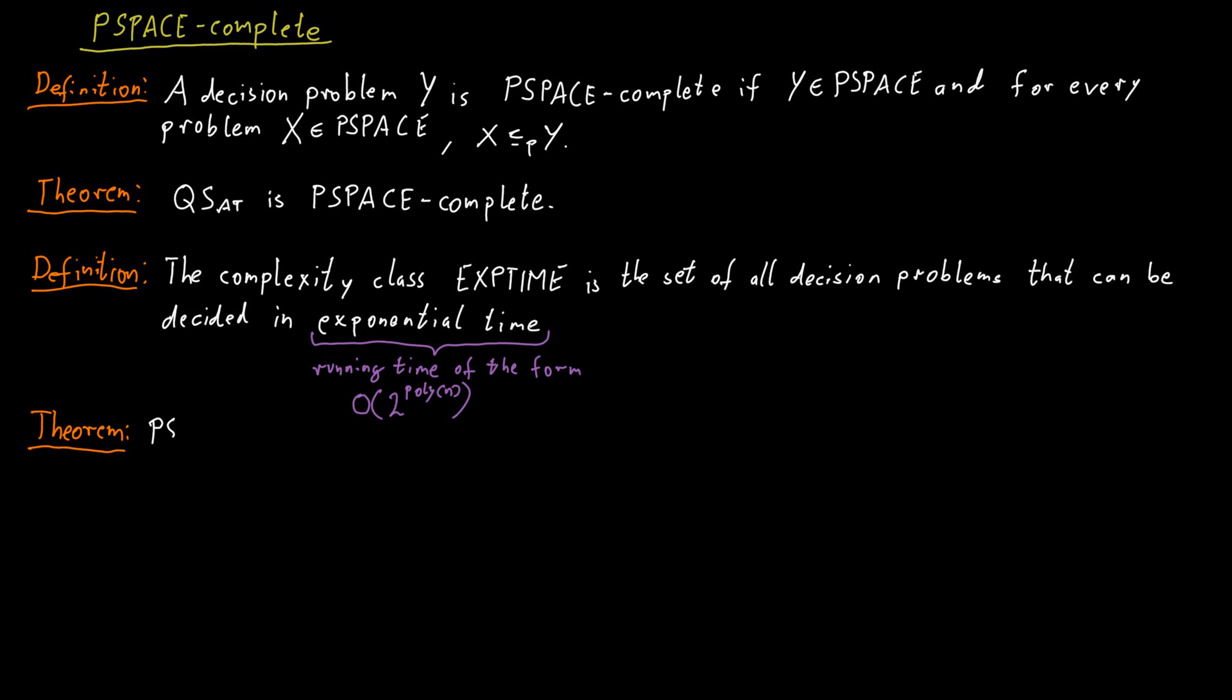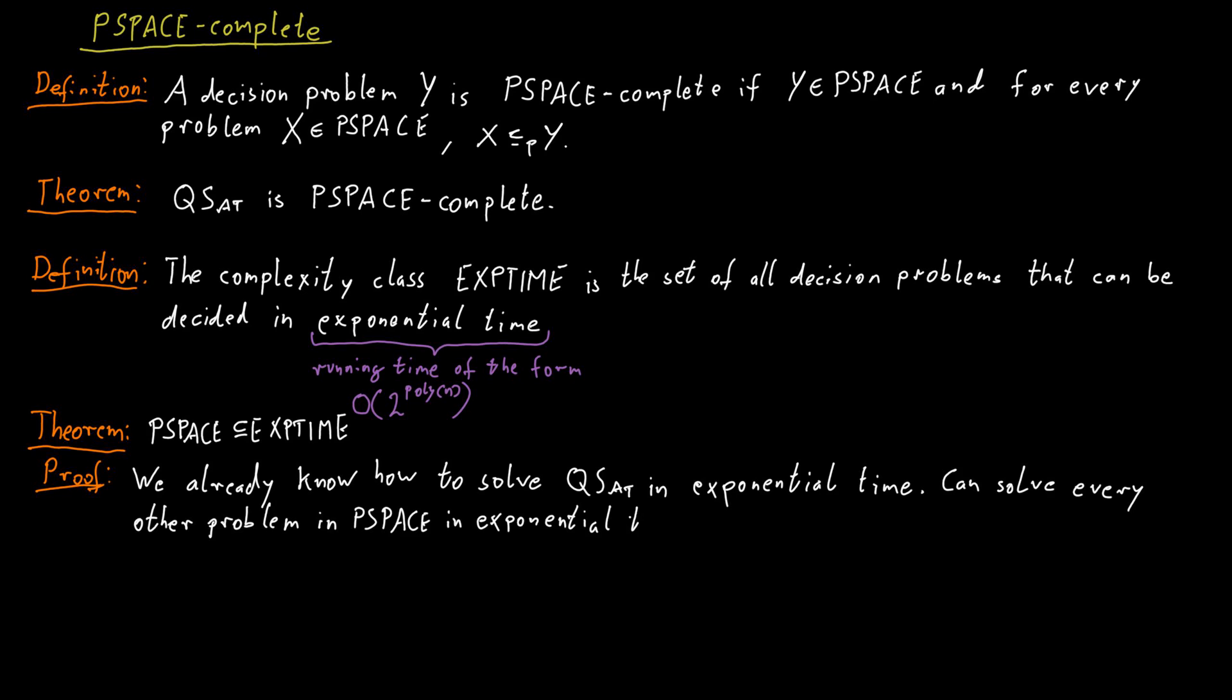The complexity class P-space is contained in the complexity class EXP-time. We can prove this in several ways. One way is to use quantified satisfiability. Our previous algorithm already solved quantified satisfiability in exponential time. Now, since we know that quantified satisfiability is also P-space complete, it means that we can solve all problems in P-space in exponential time. Because we can simply reduce those problems to quantified satisfiability in polynomial time, and then solve quantified satisfiability in exponential time to get the answer to the original question.